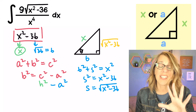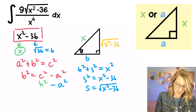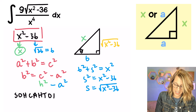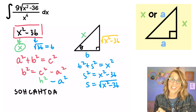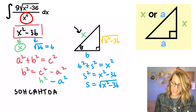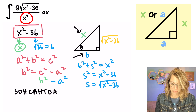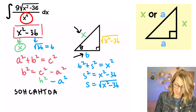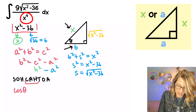Now I'm ready to replace everything in this integral in terms of theta using my trig functions — SOH-CAH-TOA: sine is opposite over hypotenuse, cosine is adjacent over hypotenuse, and tangent is opposite over adjacent. I'll start by isolating x. X is on my hypotenuse, and I'm going to combine it with the adjacent side 6, so this is a cosine relationship. The cosine of theta equals adjacent (6) over hypotenuse (x).